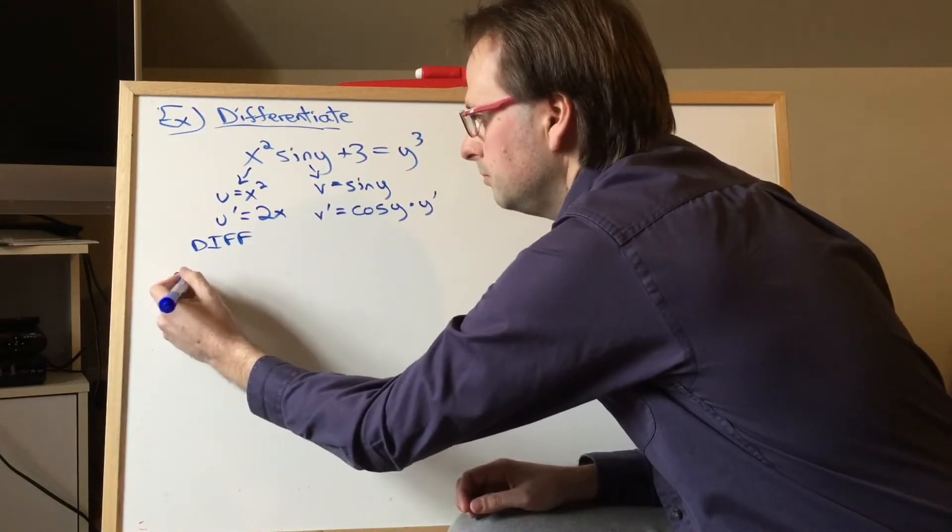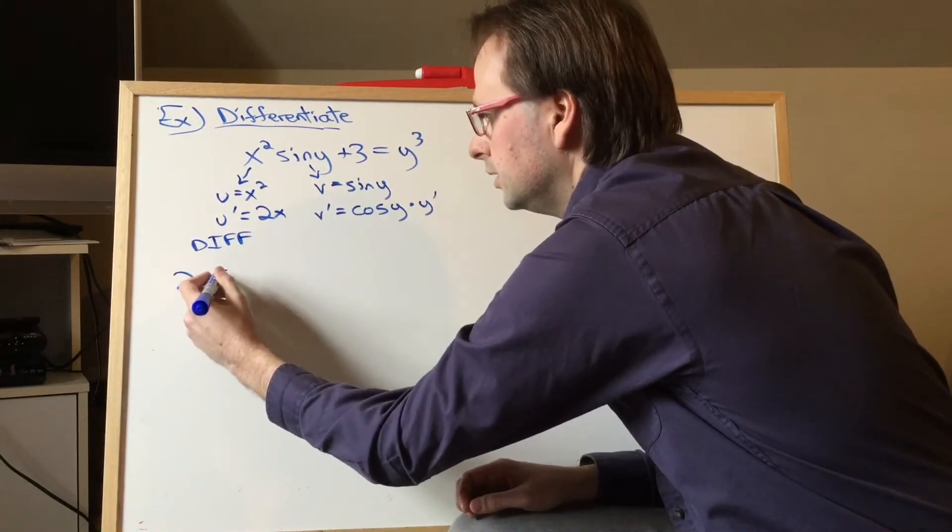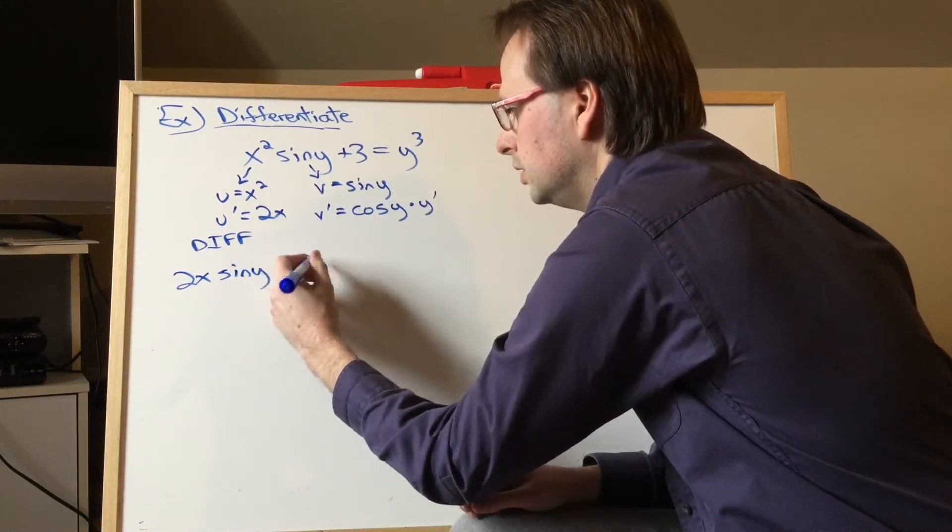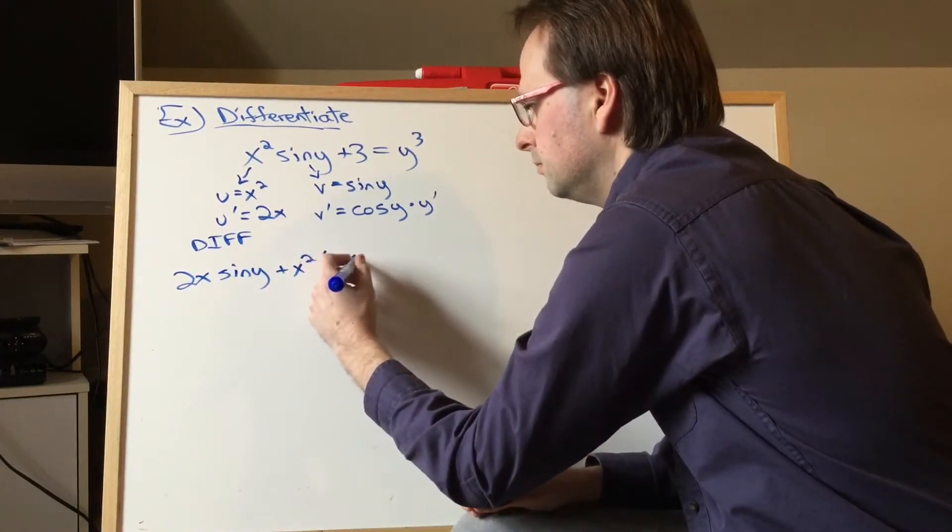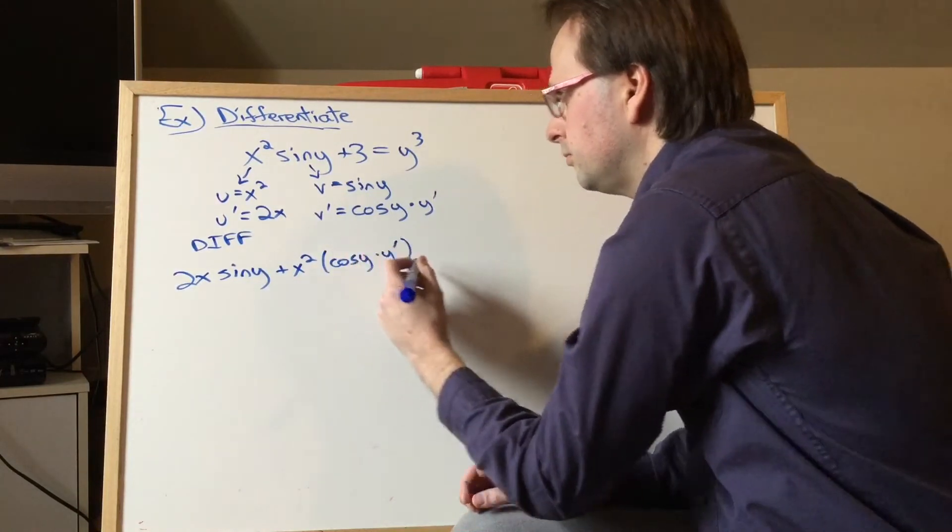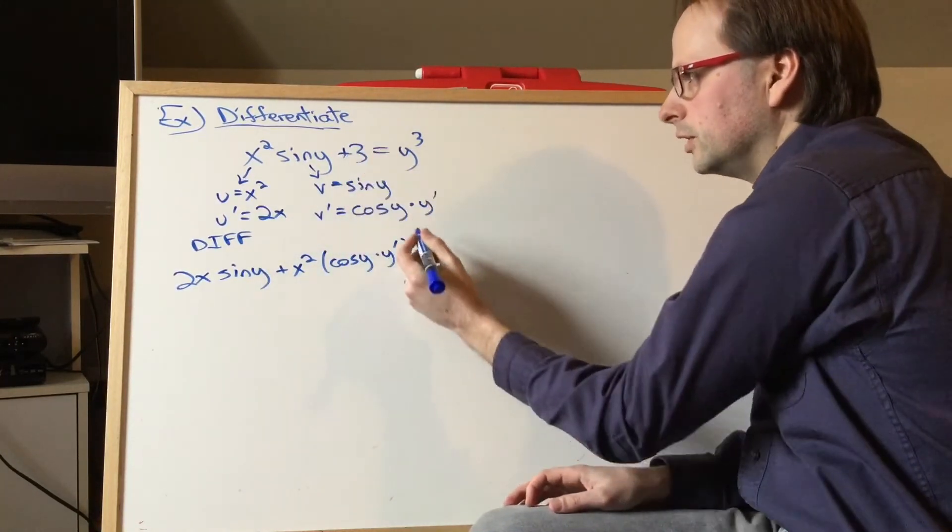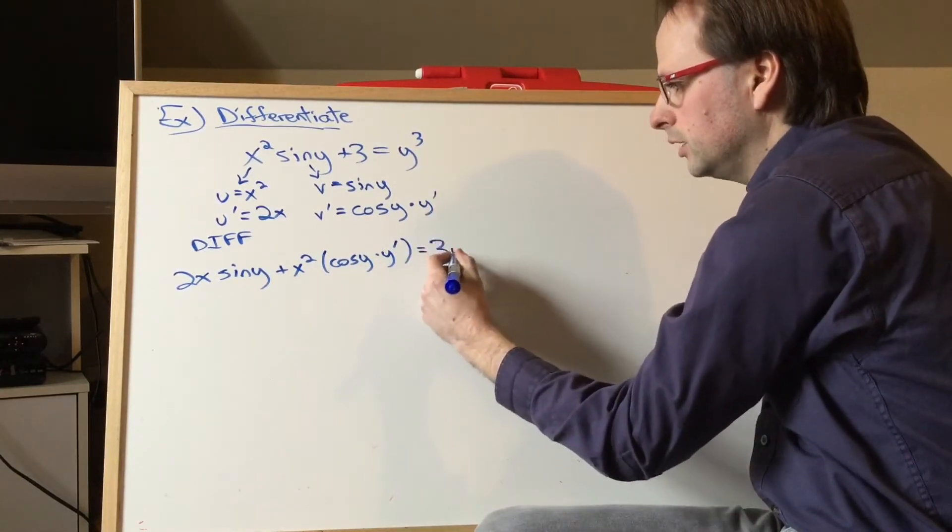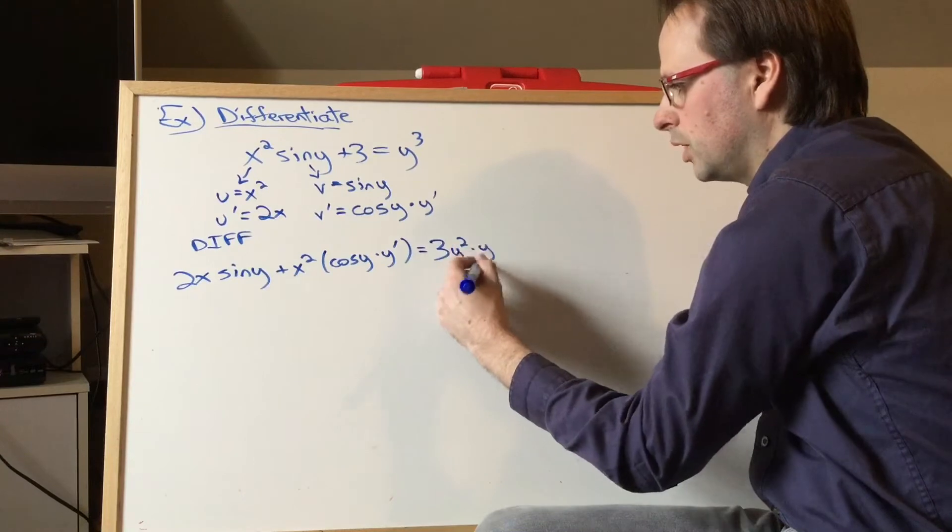So we have u prime v, plus u by v prime. And then this 3 is going to turn into a 0, and this y cubed is going to turn into 3y squared times y prime.